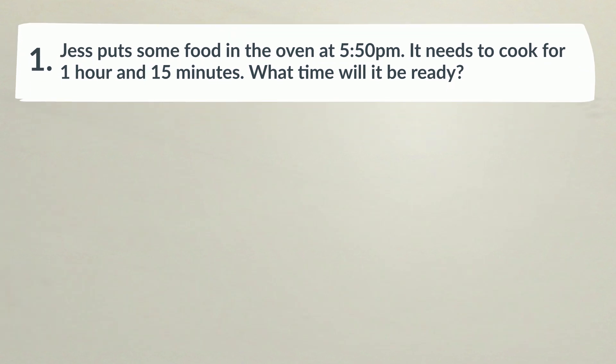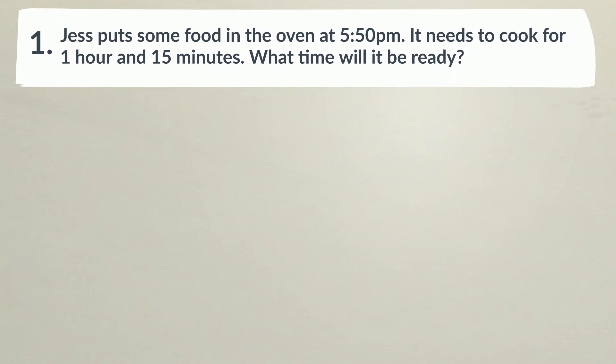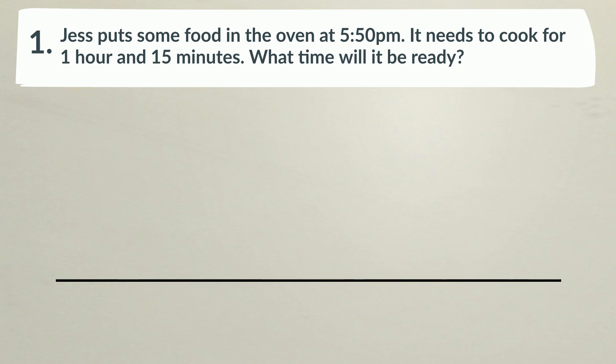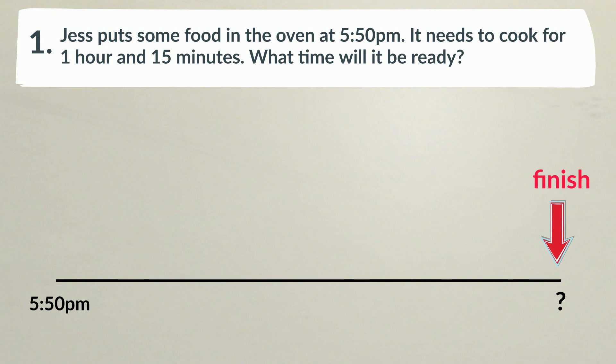Number 1. Jess puts some food in the oven at 5:50pm. It needs to cook for 1 hour and 15 minutes. What time will it be ready? We start by drawing a timeline. We know the start time, 5:50pm. We don't know the finish time, but we do know the amount of time that has elapsed: 1 hour and 15 minutes.